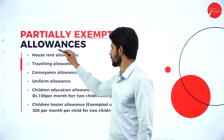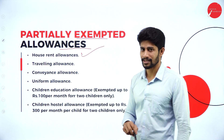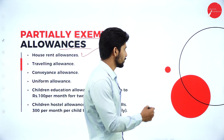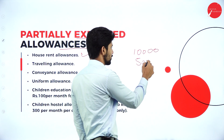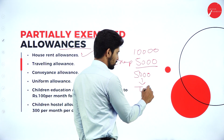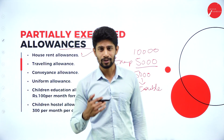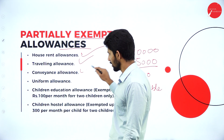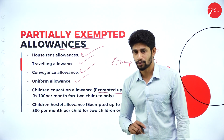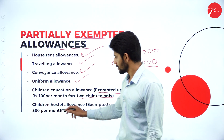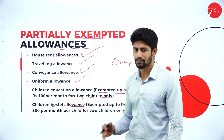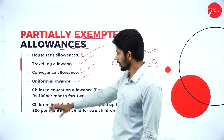Next, partially exempted allowances — that means partially exempted and partially taxable. In that category, house rent allowances: a certain part is exempted and a certain part is taxable. For example, if you are receiving 10,000 rupees, there is an exemption of 5,000 rupees, and the remaining balance of 5,000 will be taxable. This is called partially taxable and partially exempted. In that category, we have house rent allowances, traveling allowances, conveyance allowances, uniform allowances, and children education allowances — which is exempt up to 100 per month for 12 months for a maximum of 2 children. Children hostel allowances is exempted up to 300 per month for a maximum of 2 children for 12 months.